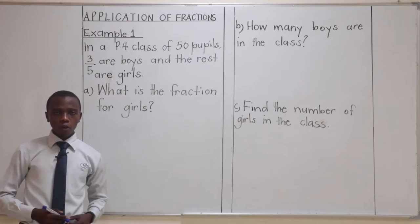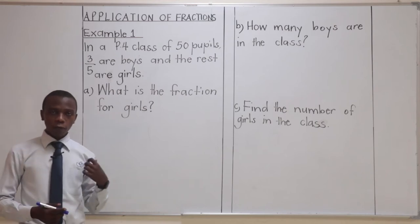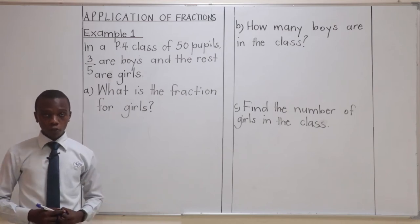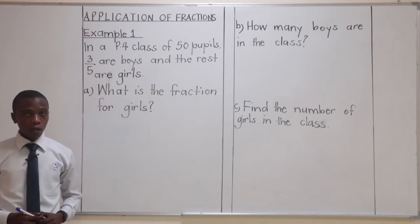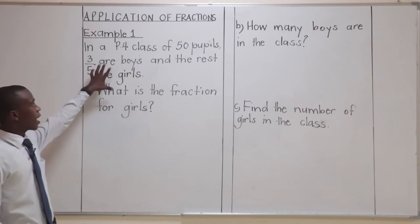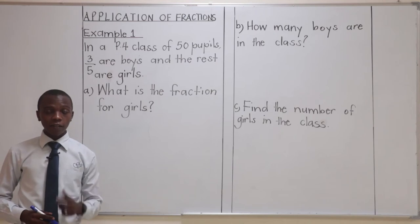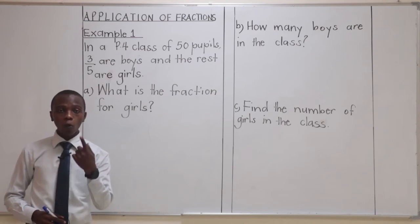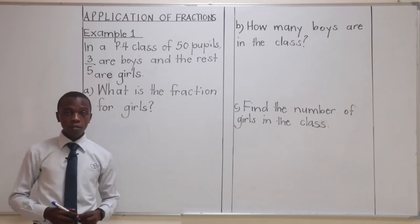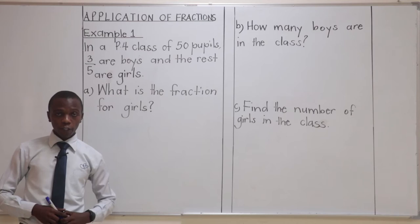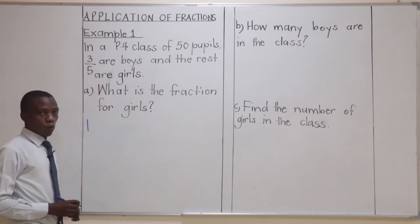Bearing the knowledge we used when we were subtracting fractions from wholes, we are able to find the fraction for the girls because we've been given a fraction that represents the boys. Now, they told us that a class has 50 pupils. Being that it's a class, that means we are dealing with one whole class. Because we already have a fraction that represents the boys, this means we can get a fraction for the girls. How?